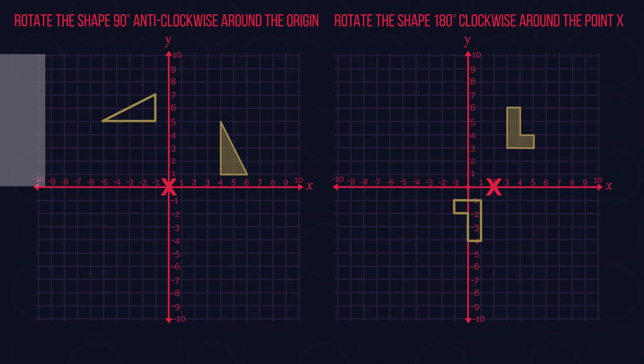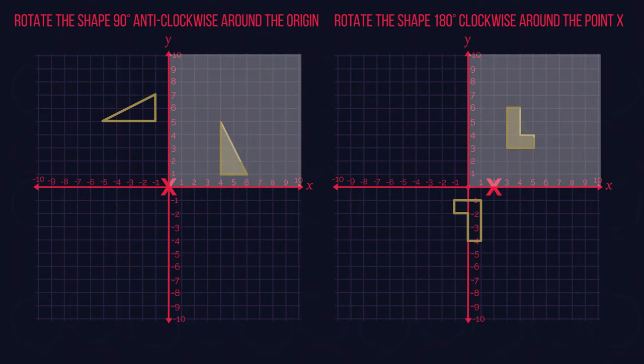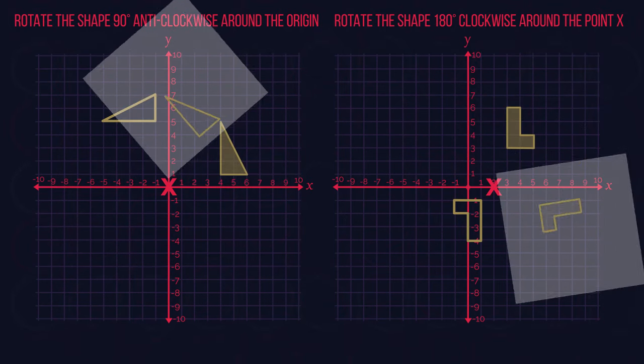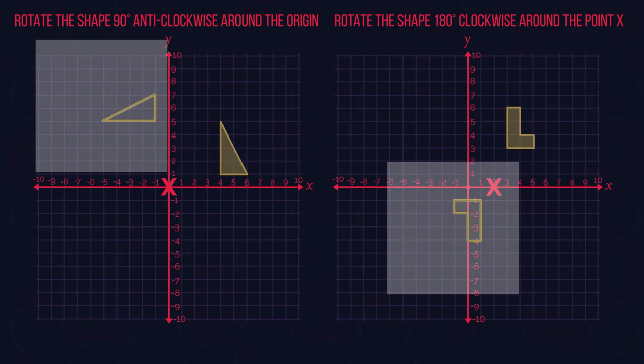If you're lucky, you'll be given tracing paper, so then you can just sketch the original shape, rotate your tracing paper around the correct amount and see where the new shape should be drawn. Easy peasy.